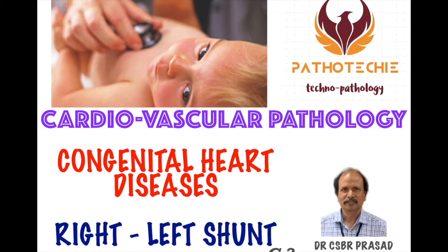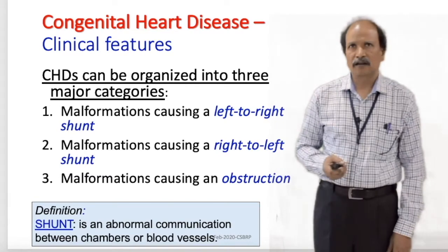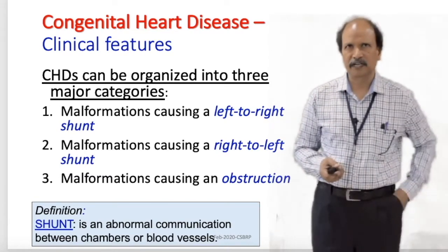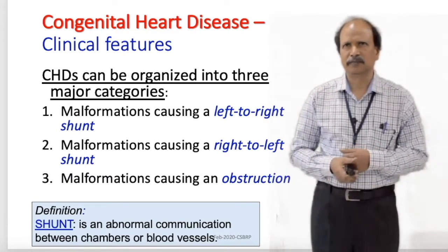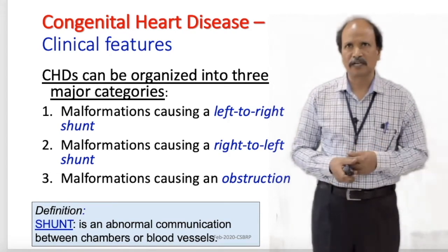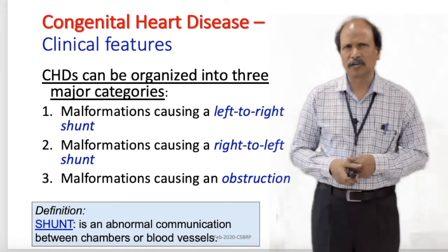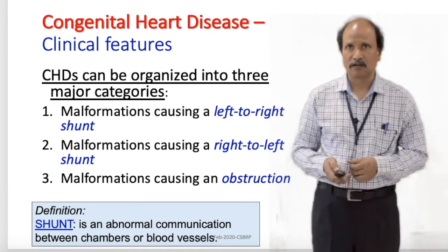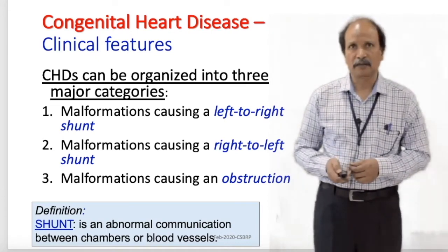This video will be on pathology and on the topic congenital heart diseases. This is the third video on congenital heart diseases and will cover the topic right to left shunts. This video will be by Dr. C.S.B.R. Prasad, professor of pathology at Sridevarajara's Medical College. Congenital heart diseases, in order to understand clinically in a better way, are classified depending upon the shunt — either left to right, right to left, or it may be a simple obstruction causing congenital anomalies.